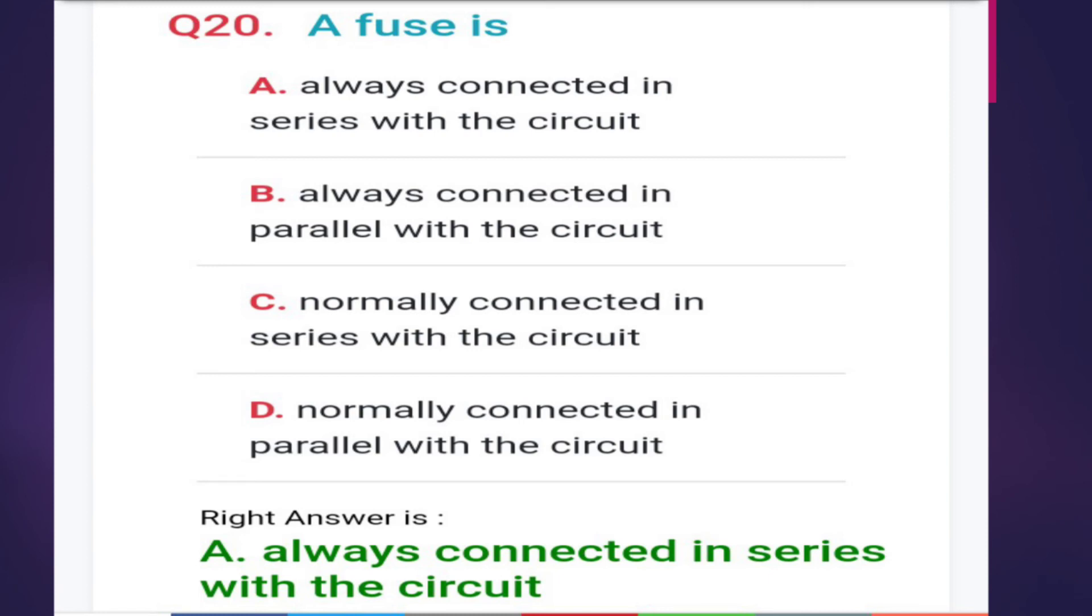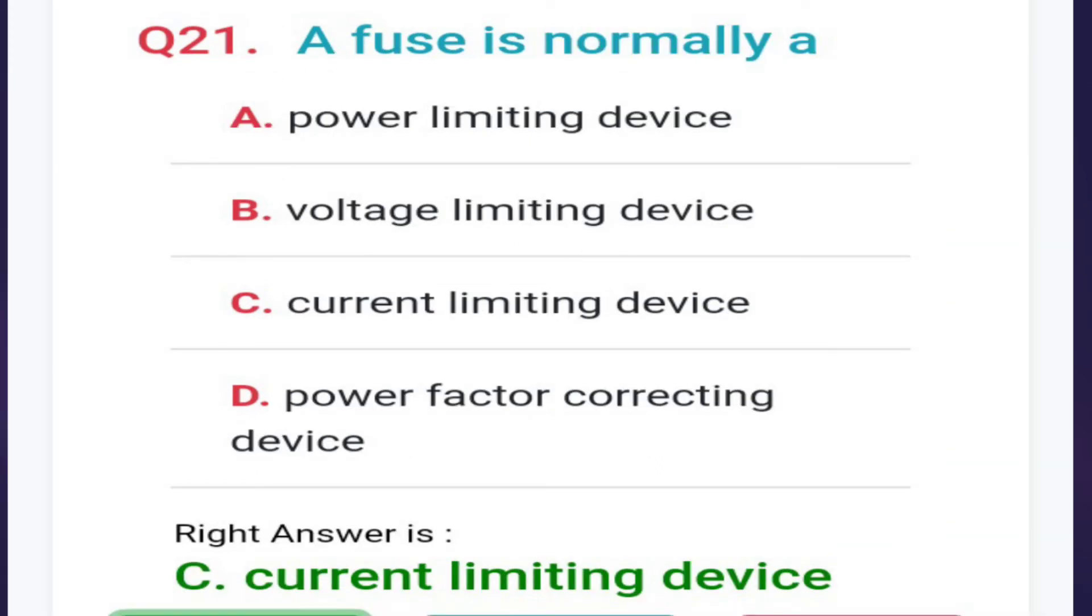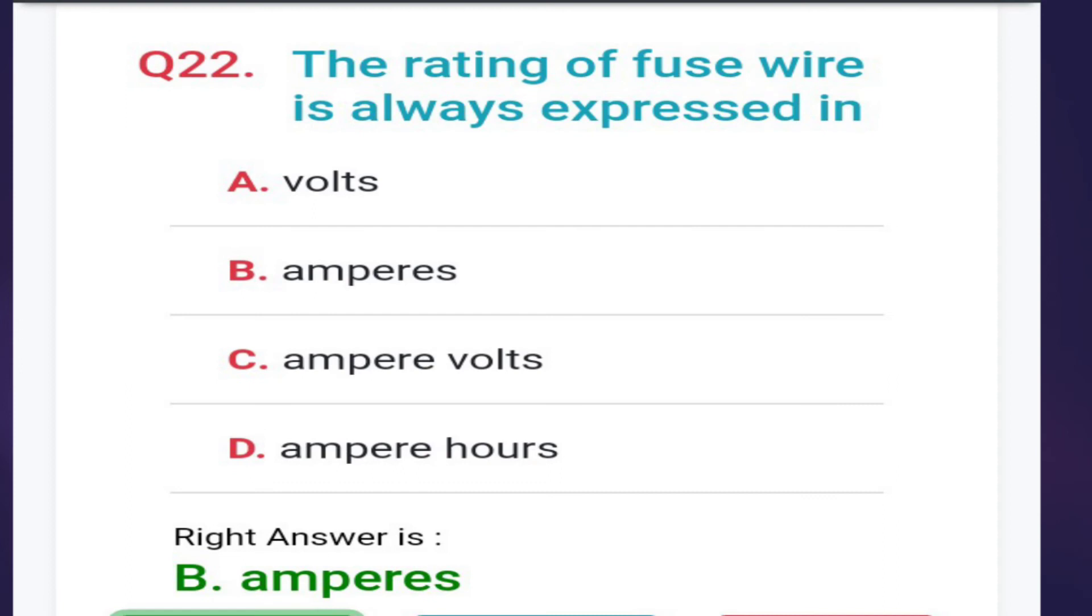Next: a fuse is always connected in series with the circuit. A fuse is normally a current limiting device. The rating of fuse wire is always expressed in ohms, amperes, ampere ohms, or ampere over volt. The correct answer is option B, amperes.